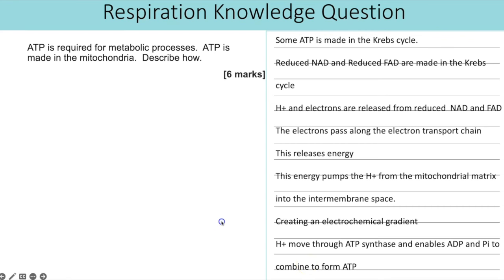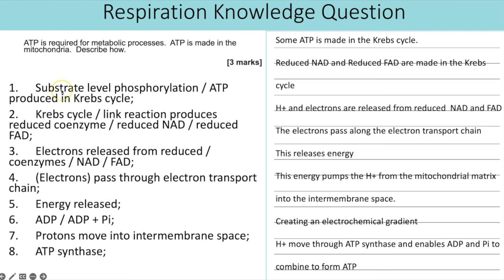Those were the different points that I would give for that question. Now let's check then. For mark number one, substrate level phosphorylation or ATP produced in the Krebs cycle. So we did have that one. Krebs cycle or link reaction produces reduced coenzymes, reduced NAD or reduced FAD. So that was the second point. Electrons released from reduced coenzymes. So that was part of that sentence. Electrons pass through electron transport chain, which we've got here. Energy is released. Then it actually jumps to the next mark, ADP and PI, which I put right at the end. And then we've got protons move into the intermembrane space and the use of ATP synthase. So that would be six marks.